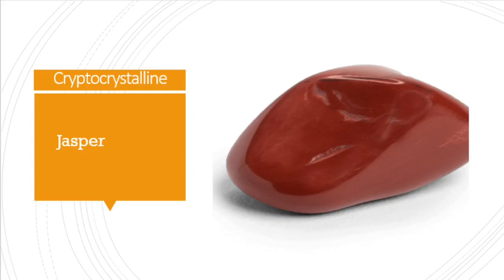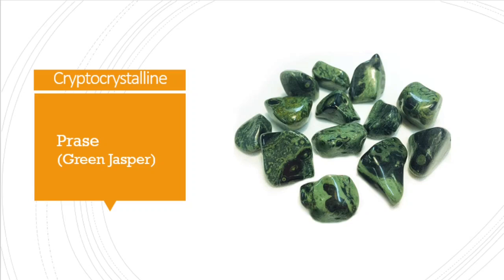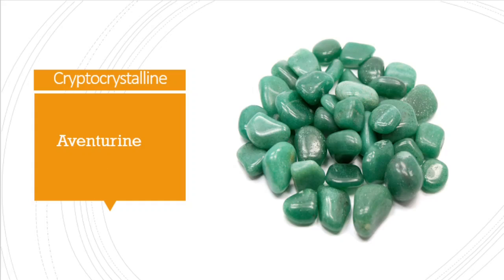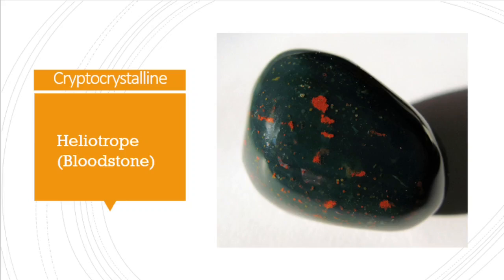Then jasper, a reddish color quartz variety, and green jasper or prase. The next one is aventurine quartz, another green color variety. Then heliotrope — also known in the market as bloodstone. Sometimes rich red color stones are sold as bloodstones, but the natural classic heliotrope or bloodstone contains little red color patches on a black background.